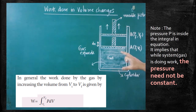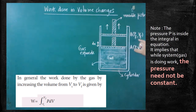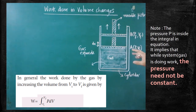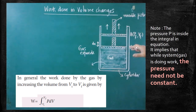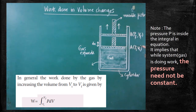After the push, the piston goes to the new position B. There, the new pressure is PF — PF means final pressure — and VF means final volume. Here, pressure decreases and volume increases. Due to this volume change, we are going to find out the work done expression.